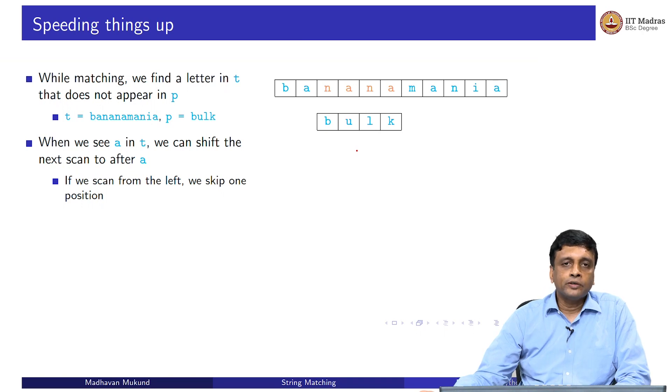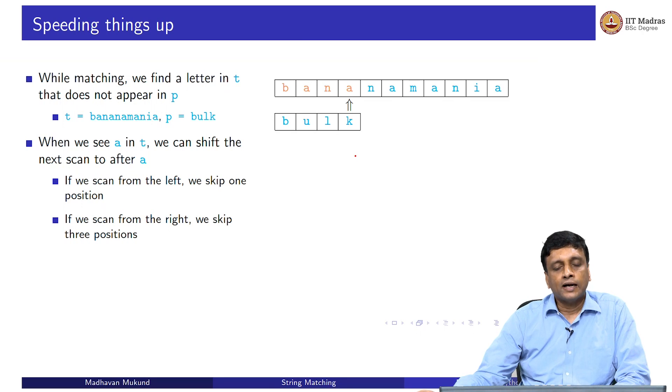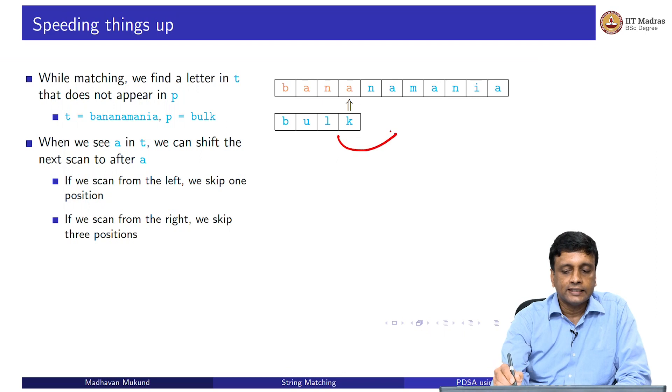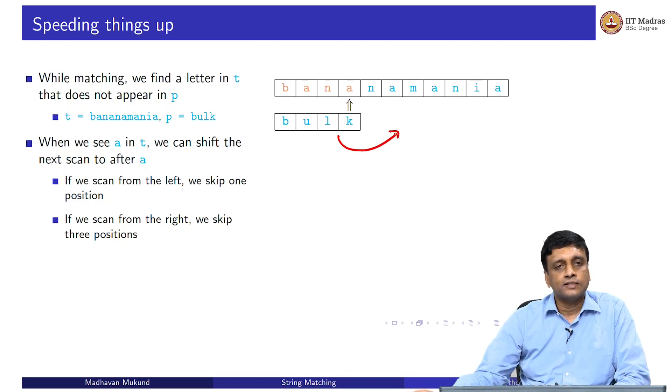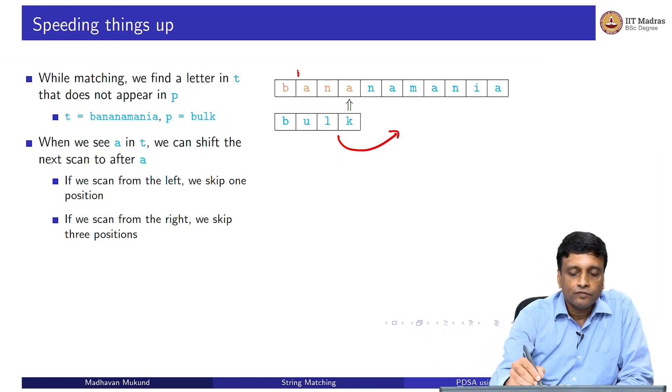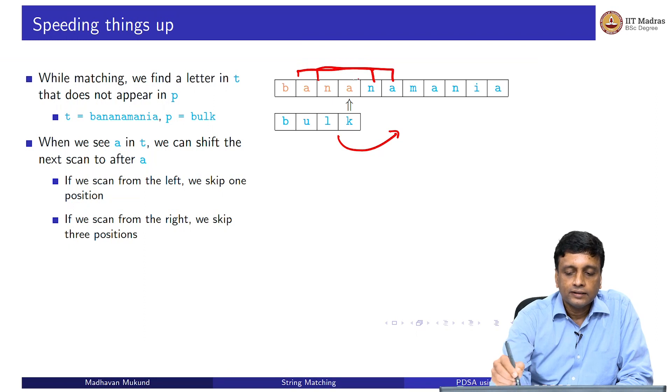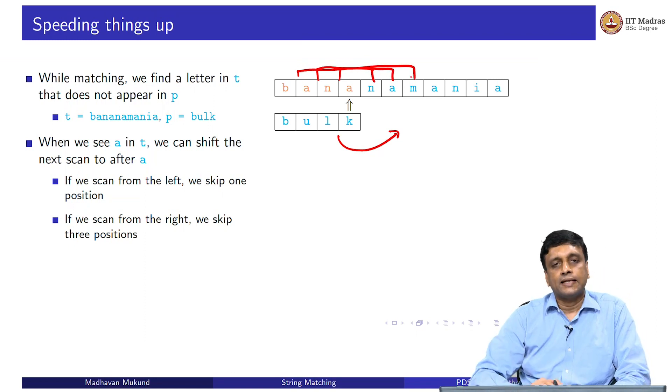Suppose instead, we were doing our reverse scan. We have the same situation, but now we start from the right and we find a mismatch with the last letter, which is again an A against our K, which is the last position in bulk. Once again, we know that A does not occur. It does not matter what is before that, we know that we have to shift this entire word after the A, because there is no point in trying any of these intermediate things, because all of them would overlap this A.